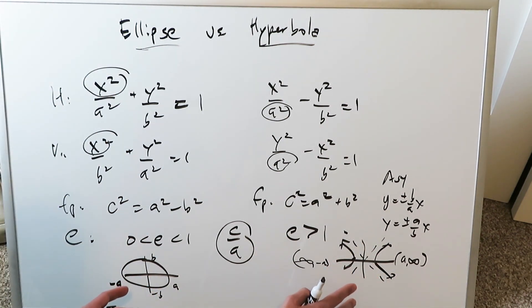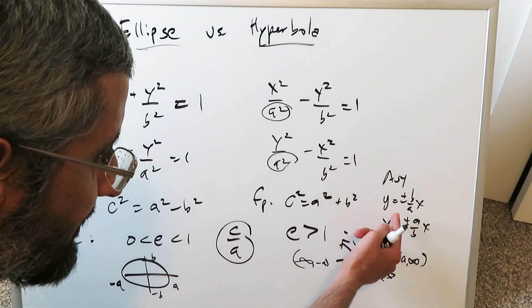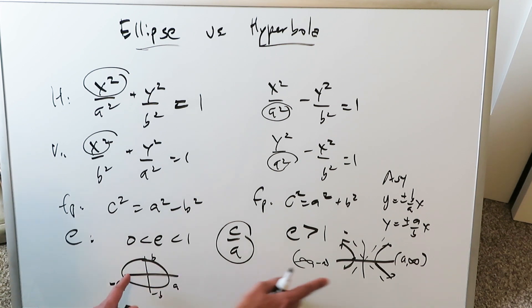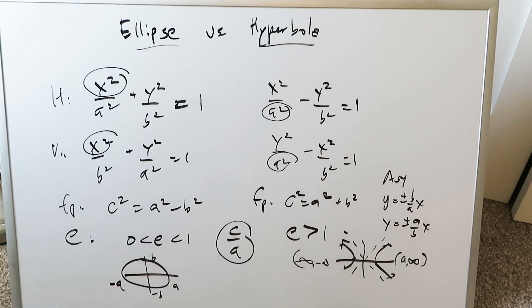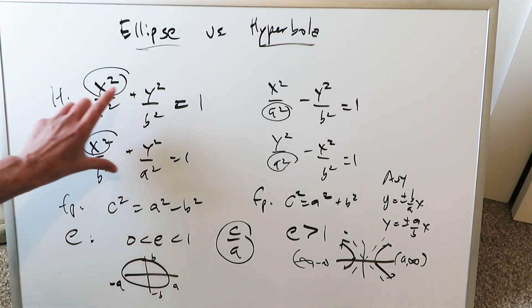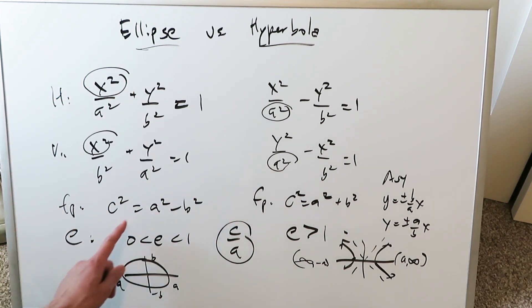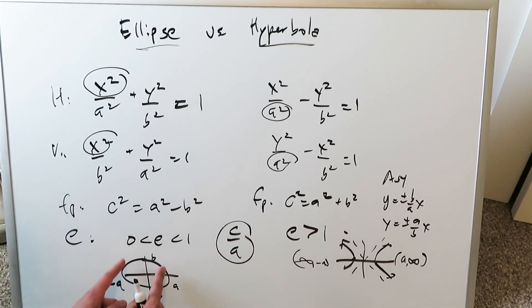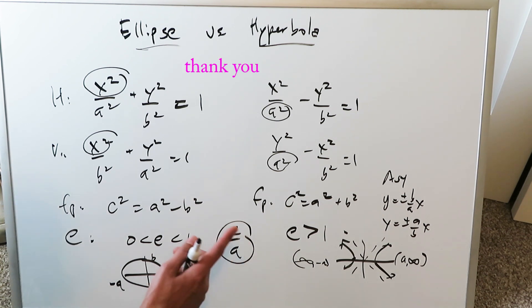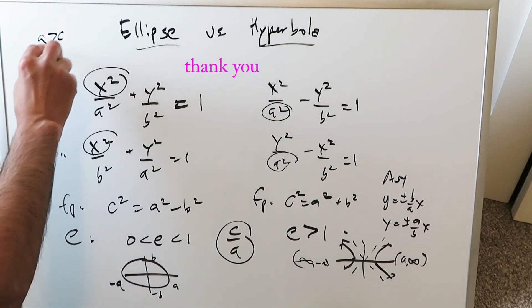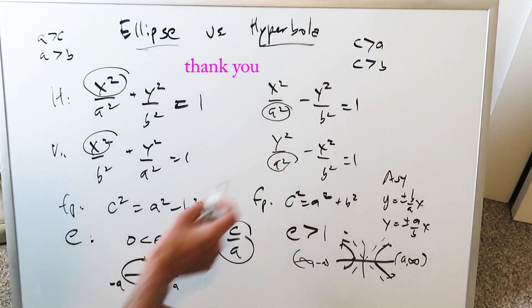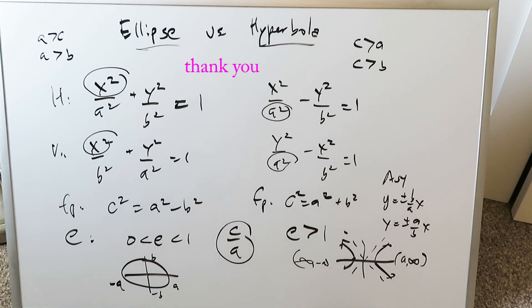I'm only showing part of the picture — I'm not covering translations where h and k come into play, just keeping everything general and simple, focusing on horizontally directed ellipses and hyperbolas. Keep these differences: the equation form and positive versus negative sign, the focal point calculations of c, the eccentricity differences, the domain and range differences, and the relationships — for the ellipse a is larger than c and larger than b; for the hyperbola c is larger than a and c is larger than b. And that's it for this video. Thank you for watching.